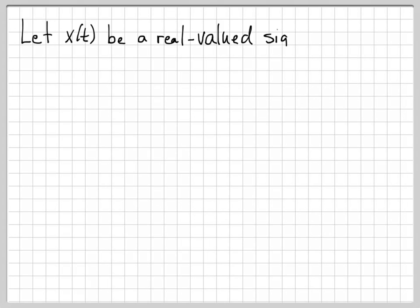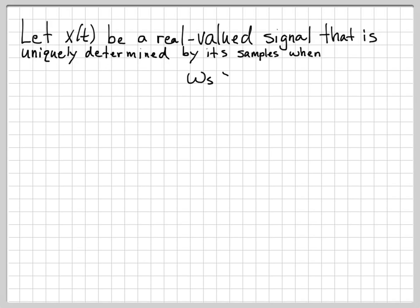Okay, so let's consider the signal x(t). It's a real-valued signal, and we know that it is uniquely determined by its samples whenever we are sampling at a rate ωs greater than or equal to 5000π.